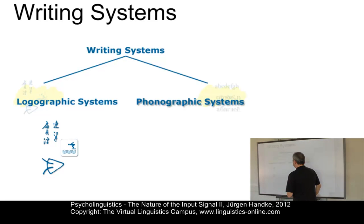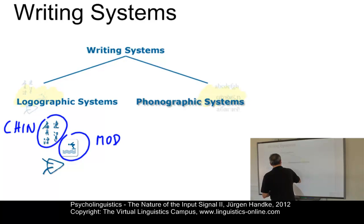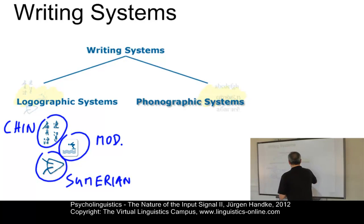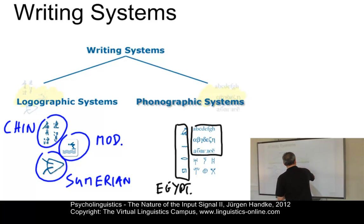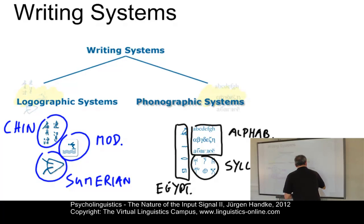On the one hand, we have logographic writing systems. Here, for example, you see typical Chinese characters. This is a modern logographic symbol, and here we have an old Sumerian symbol used a long time ago. The other main branch is called phonographic writing systems, and there are several kinds — for example, Egyptian hieroglyphs, our alphabets, typical alphabetic writing systems, and a so-called syllabic writing system, which we will look at later on.